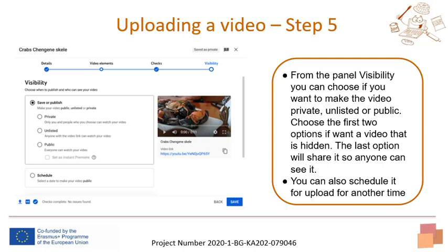From the visibility panel, you can choose to make the video private, unlisted, or public. Choose the first two options if you want a video that is hidden, for example for personal use or drafts. The private option makes the video visible only to people you select. The unlisted option allows anyone with the link to see it, but it won't be available to people exploring YouTube. The public option shares it so anyone can see it. You can also schedule the video for upload at another time.